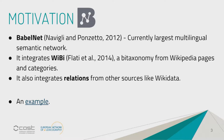BabelNet is a semantic network, meaning it's a data structure in graph format. Each node is a synset — like WordNet synsets, sets of synonyms that collapse into one single entity — containing linguistic, lexicographic, and semantic information about that item. Because it's a graph, these synsets, these nodes, are related by edges encoding a relation between them. These edges can also encode semantic information: hypernymy, meronymy, antonymy, etc.